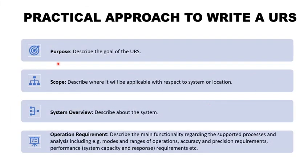Regarding the practical approach to write a URS, the first point is purpose — describe the goal of the URS, defining what kind of operation, function, regulatory, and performance requirements are expected from the system. Next is scope — describe where it will be applicable with respect to the system or location. For example, if the system will be used in a particular department, specify the location.